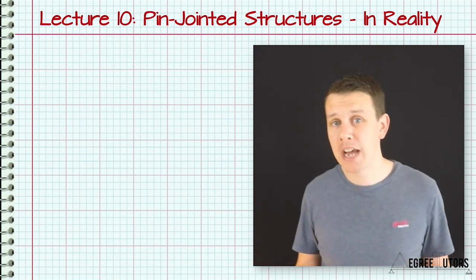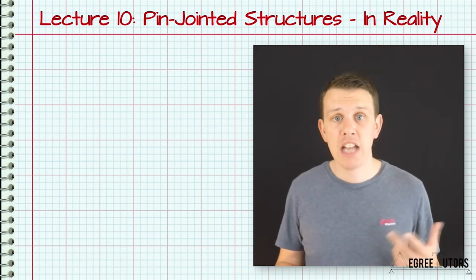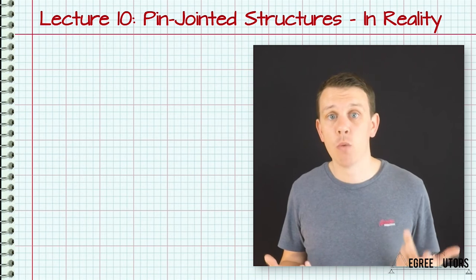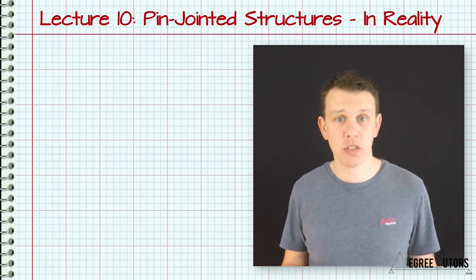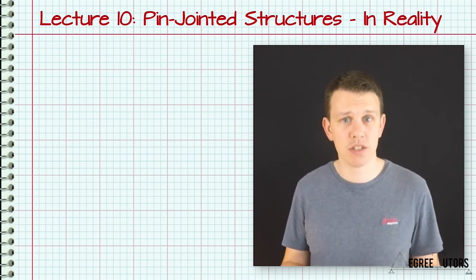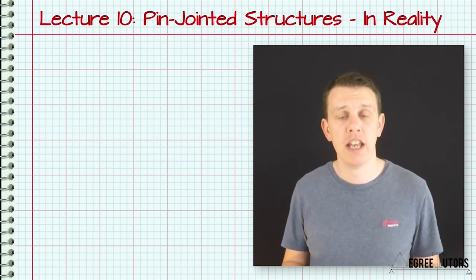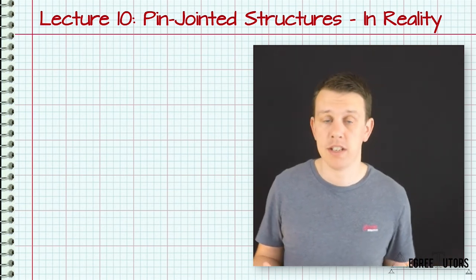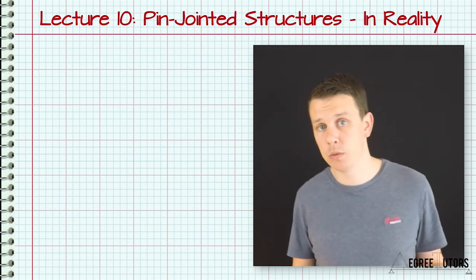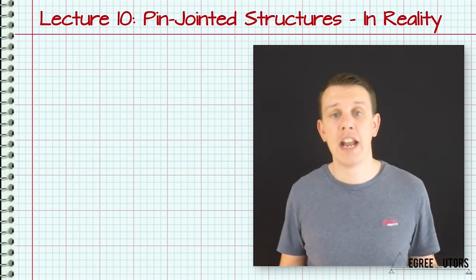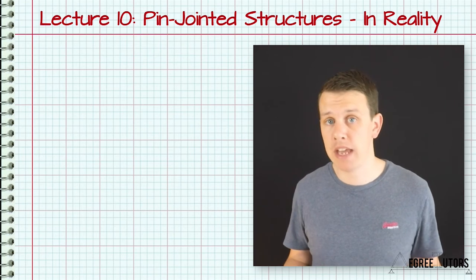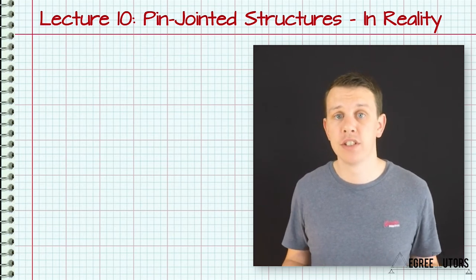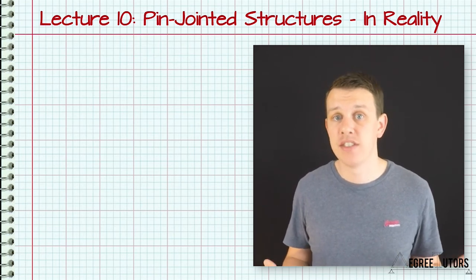So typically what happens is the joints are either welded or bolted connections, and so they actually can resist some rotation. That introduces some differences between how our analysis models suggest the truss will behave and how the truss really behaves. Fortunately those differences aren't that big usually.